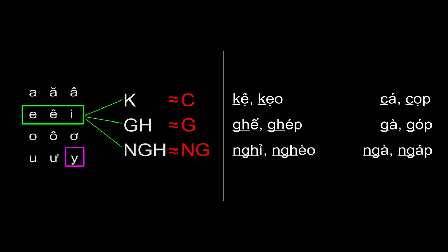On the right side of your screen, I have placed some examples showing that K, G-H, and N-G-H only goes with the second row, a, a, e, while C, G, and N-G does not go with the second row, and the letter Y. There is an exception with the letter Y in which I will go over in a separate video.